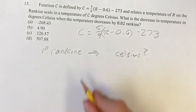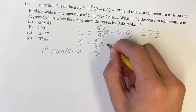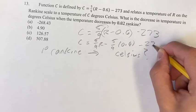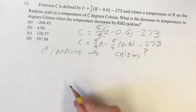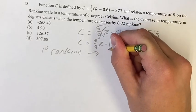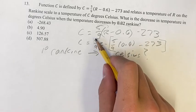Okay, if we distribute this out, we have C is equal to 5 over 9R minus 5 over 9 times 0.6 minus 273. So if you think of this in terms of, like, the y equals mx plus b as you normally do it, this is our b, this is just our constant, and the rate of change is 5 ninths.